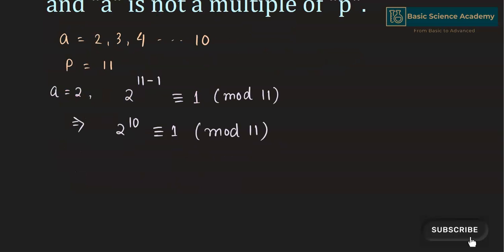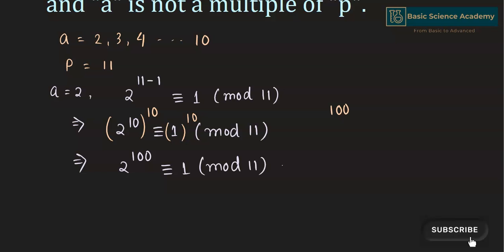Since we need 100 as the exponent, we have to take both sides to the power of 10. This gives 2 to the power of 100 is congruent to 1 mod 11. This is our first equation.